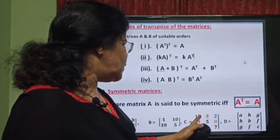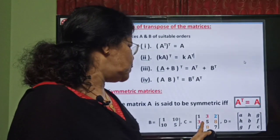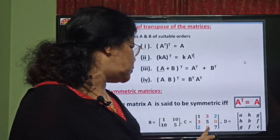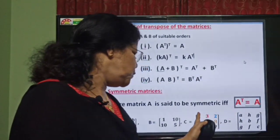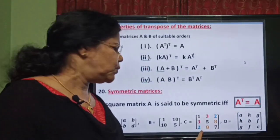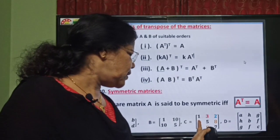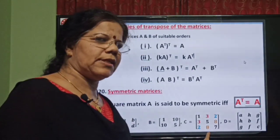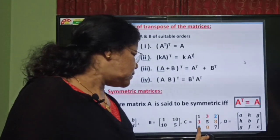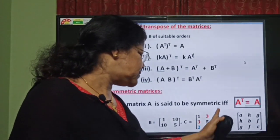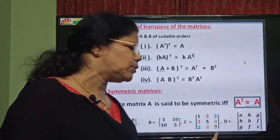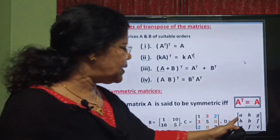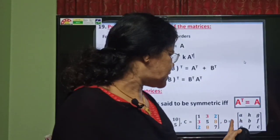C equals the matrix 1, 3, 2 / 3, 5, 8 / 2, 8, 7. The first row 1, 3, 2 equals the first column 1, 3, 2. The second row 3, 5, 8 equals the second column 3, 5, 8. The third row 2, 8, 7 equals the third column 2, 8, 7.